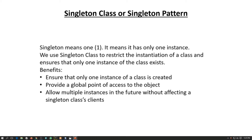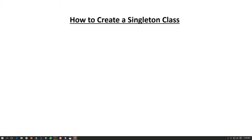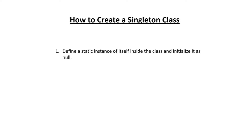We use singleton class to restrict the instantiation of a class and ensure that only one instance of the class exists. Its benefits are: ensure that only one instance of the class is created, provide a global point of access to the object, and allow multiple instances in the future without affecting the singleton class client.